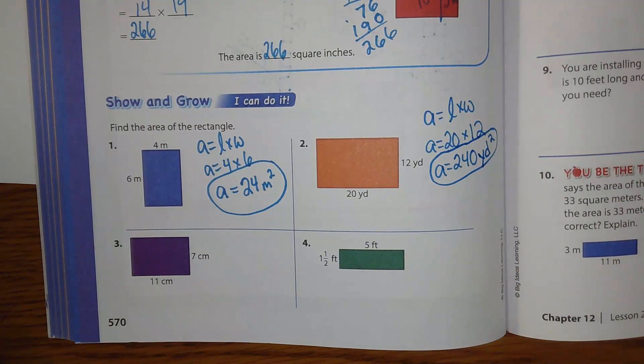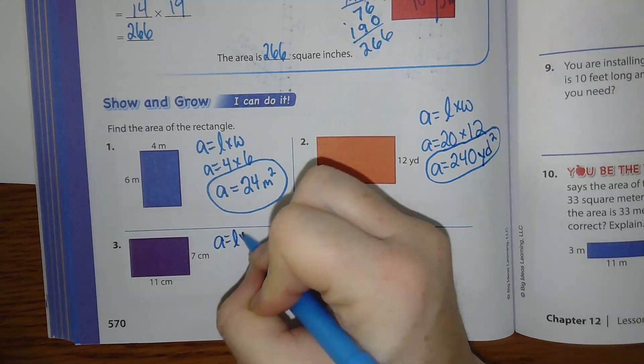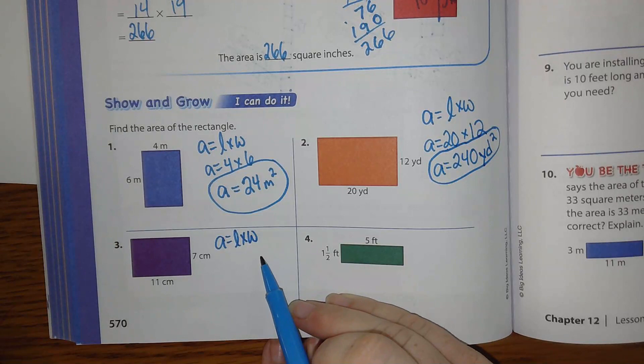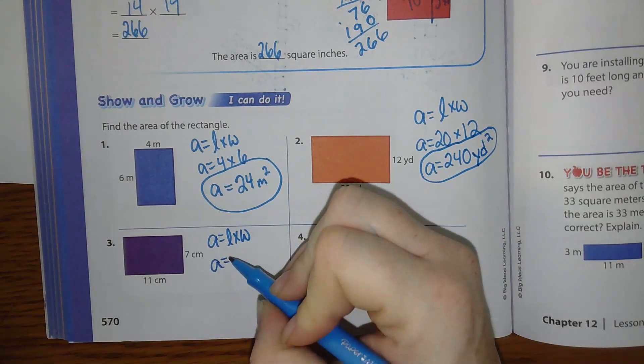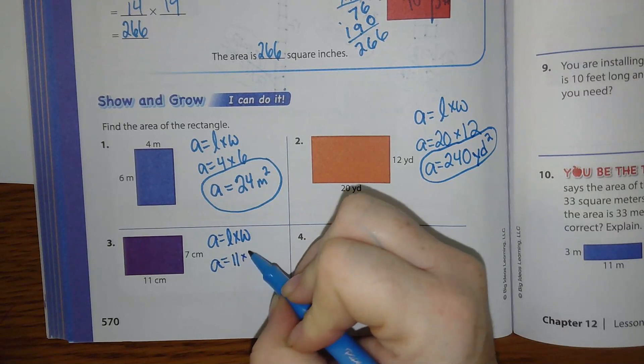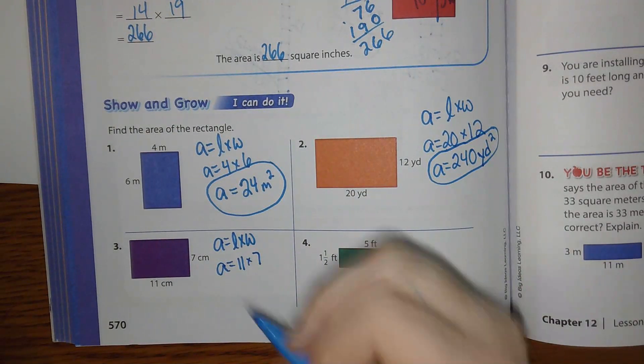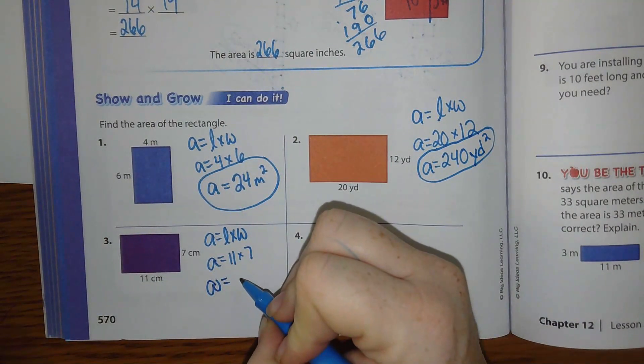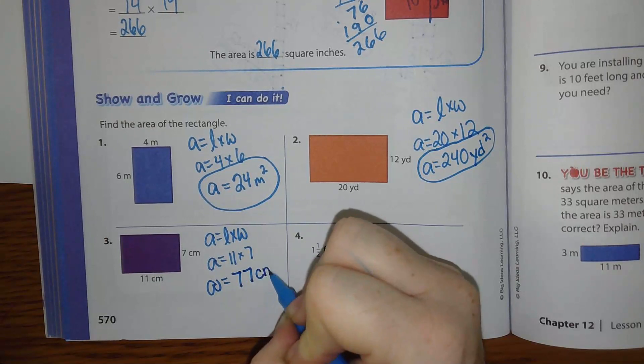Number 3. You're going to put A equals L times W. Because area equals length times width. Area equals 11 times 7. Area equals 77 centimeters squared.